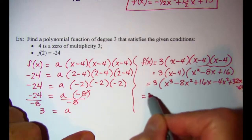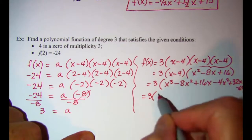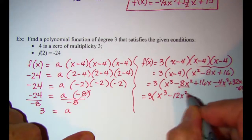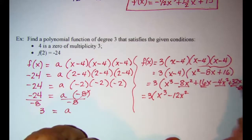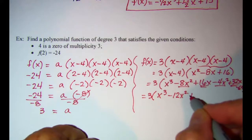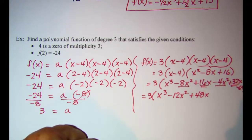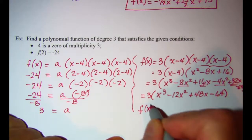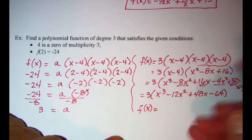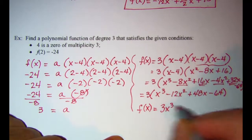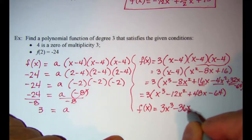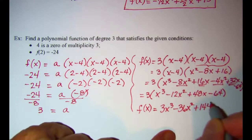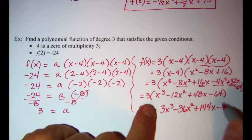Combining terms: x cubed, negative 8x squared and negative 4x squared gives negative 12x squared, 16x and 32x gives 48x, and negative 64. Multiplying through by 3 gives f of x equals 3x cubed minus 36x squared plus 144x minus 192.